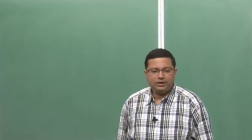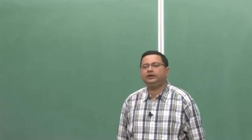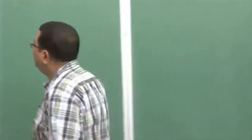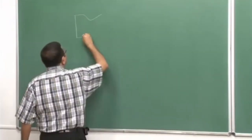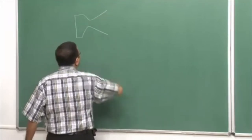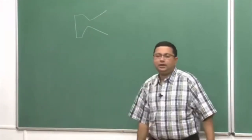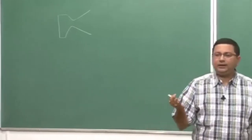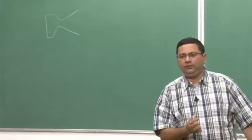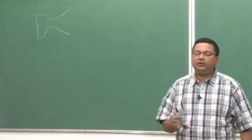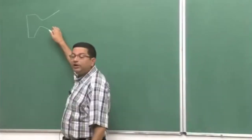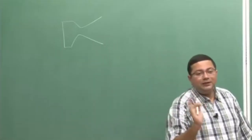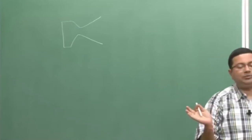Good morning. In the last couple of lectures, we have been discussing shaped nozzles. We first discussed a conical nozzle, and we showed that because of the three-dimensional effect, there is a loss in performance, which was given by a factor lambda, which depends on the half cone angle. This loss is primarily because of the flow deviating from the nozzle axis due to the three-dimensional effect.